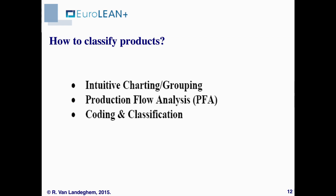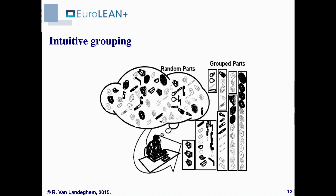We can also classify products based on their technical characteristics. From that, we can use either intuitive grouping based on the experience of the people, or we can use a classification scheme that formalizes these characteristics — which is obviously more suited for large amounts of products. Production flow analysis looks at the flow patterns that emerge from the production sequence or the machines that are used, and tries to group them into homogeneous cells. Intuitive grouping looks at the type of parts as well as the type of processes.